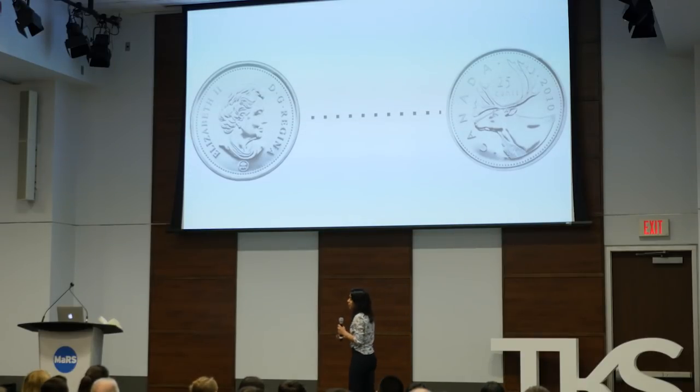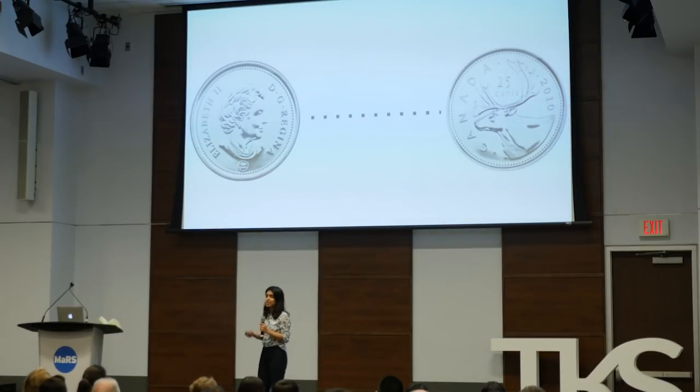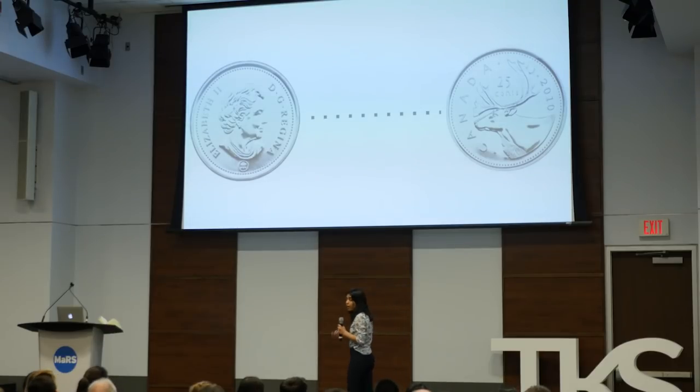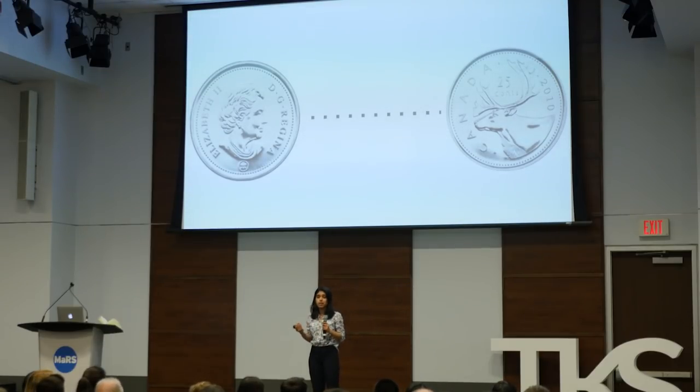The second idea is quantum entanglement — the idea that you can have two pieces of matter, such as two electrons, that share a unique connection or correlation with each other. Going back to the coin example, I have two coins that are entangled. One is here in Canada and one is in Greece. If I flip the coin in Canada and it lands on heads, then I know the coin in Greece is going to be tails. This is absolutely insane because we can extrapolate two bits of information just by measuring one bit.